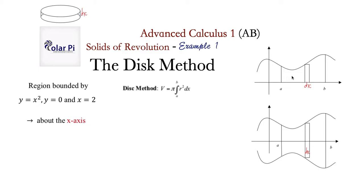Recall that when we did area approximations using Riemann sums, we took the area bounded by x equals a, x equals b, the x-axis, and the function f of x. What we did is use a bunch of rectangles — we used the sum of the areas of the rectangles to approximate the area of the region. The height of the rectangles was given by the function's value on the left end of every interval that defines the rectangle's width.